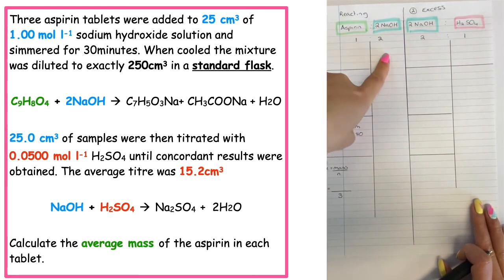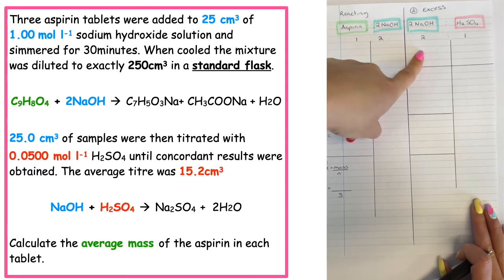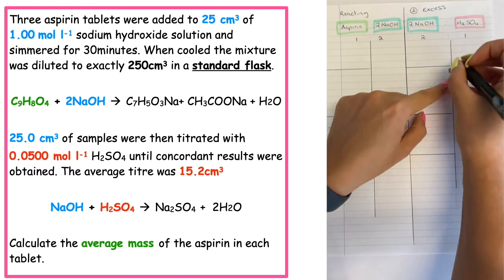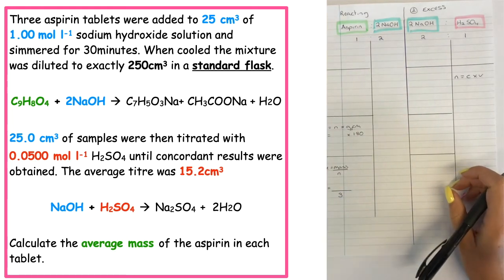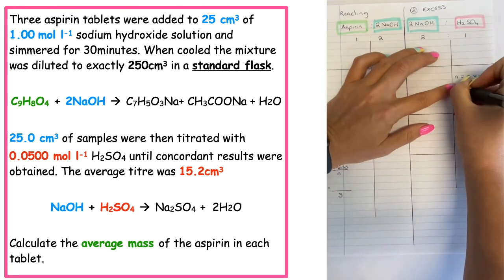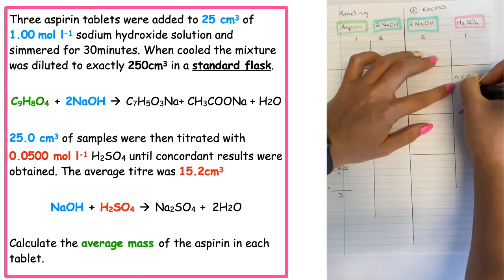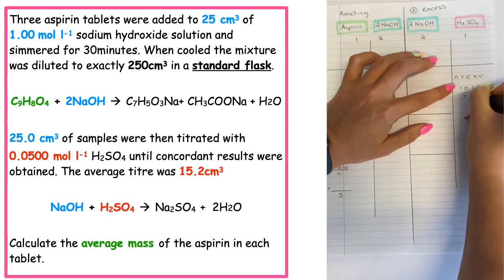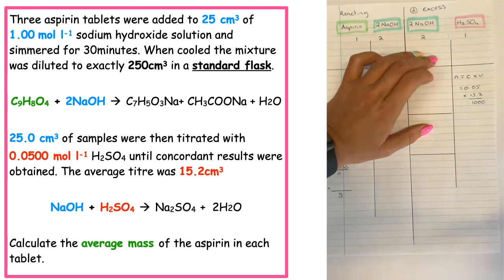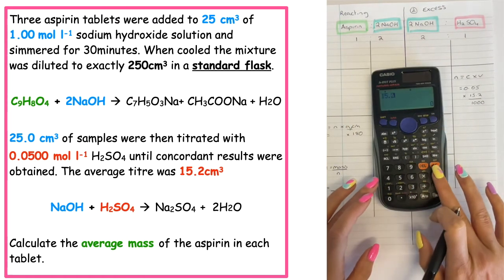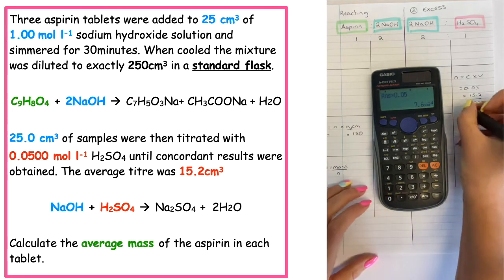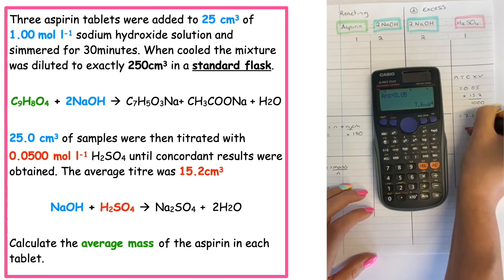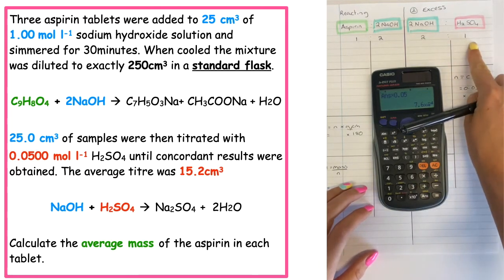To work out the moles of aspirin, we first need to calculate the moles of sulfuric acid that reacted. Reading the question, the concentration of sulfuric acid is 0.05, and we multiply that by the average titer of 15.2 divided by 1000. Entering that into the calculator gives 7.6 × 10⁻⁴ moles of sulfuric acid that had reacted.